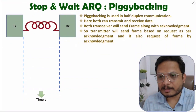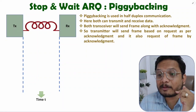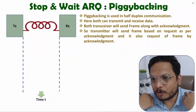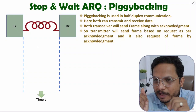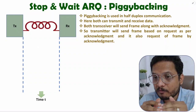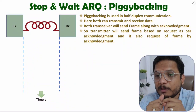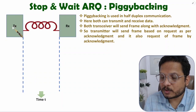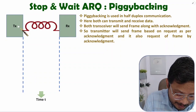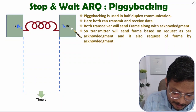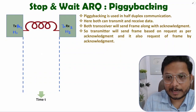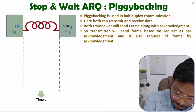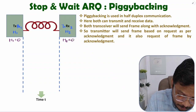The next case is piggybacking. Piggybacking means acknowledgement is carried along with the frame — like a father carrying a child on his shoulder. In piggybacking, along with the frame we forward the acknowledgement. This applies to half-duplex communication, where both sides can act as transmitter and receiver. We call them tx/rx 1 and tx/rx 2, or host 1 and host 2.